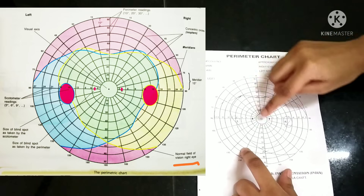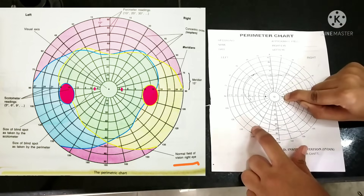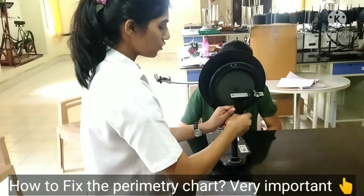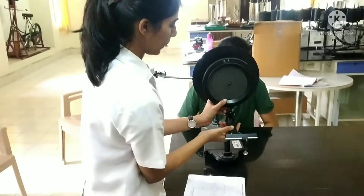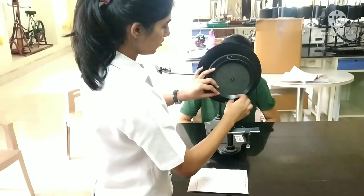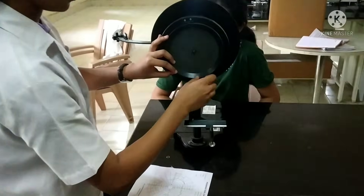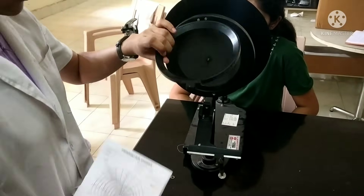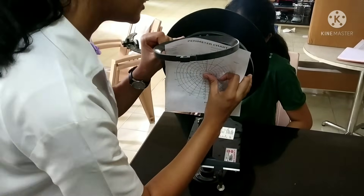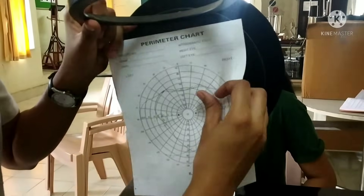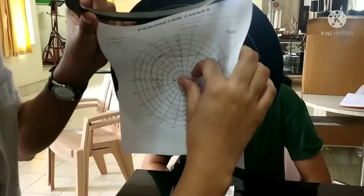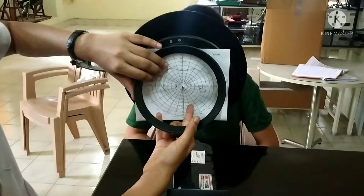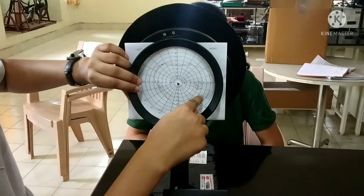The radii are known as meridians, placed at an interval of 15 degrees. The small dots visible on the chart represent the blind spot. To fix the perimetry chart, we remove the screws first, then pin the perimetry chart centered on the sharp point. Now we have fixed the perimetry chart.